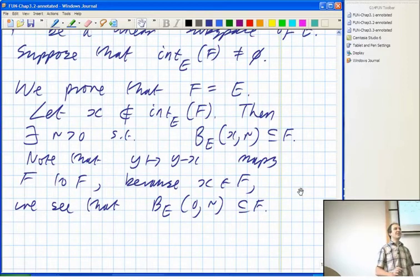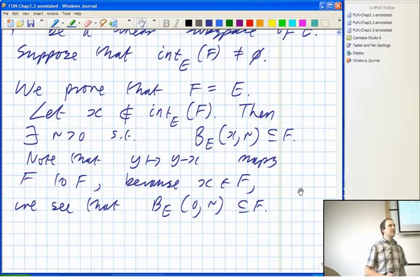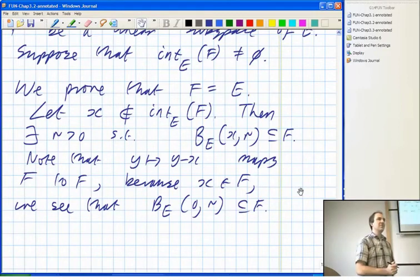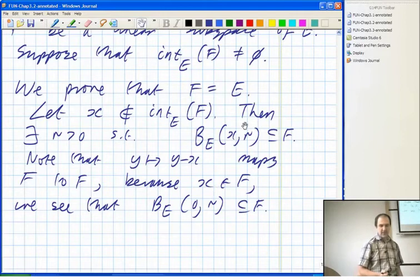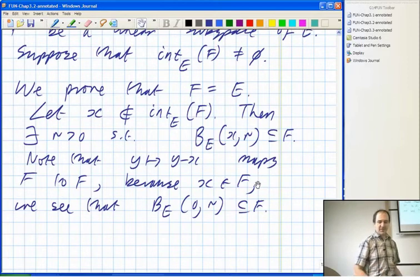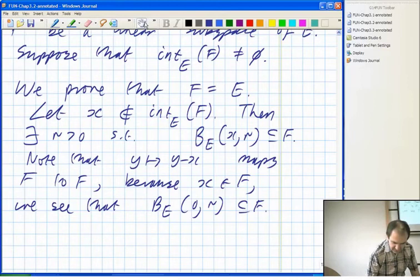Is that bit clear or any questions about this bit? If you take a ball centered on X radius R and you translate it by minus X, you definitely get the ball centered on 0 radius R. And since every point in the first ball is in F, and since X is in F, when you subtract X from everything, you get these points and they're still in F.